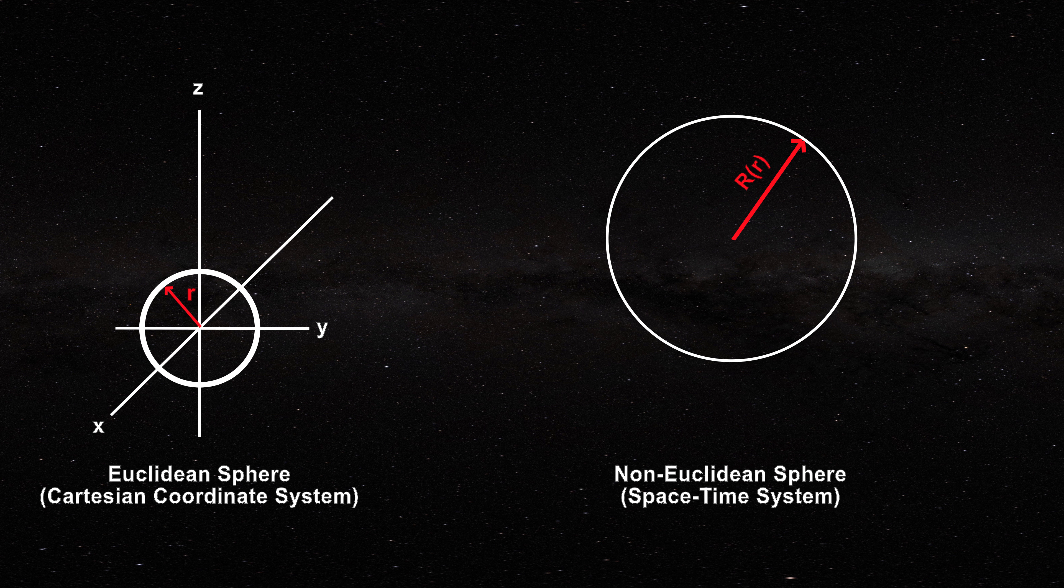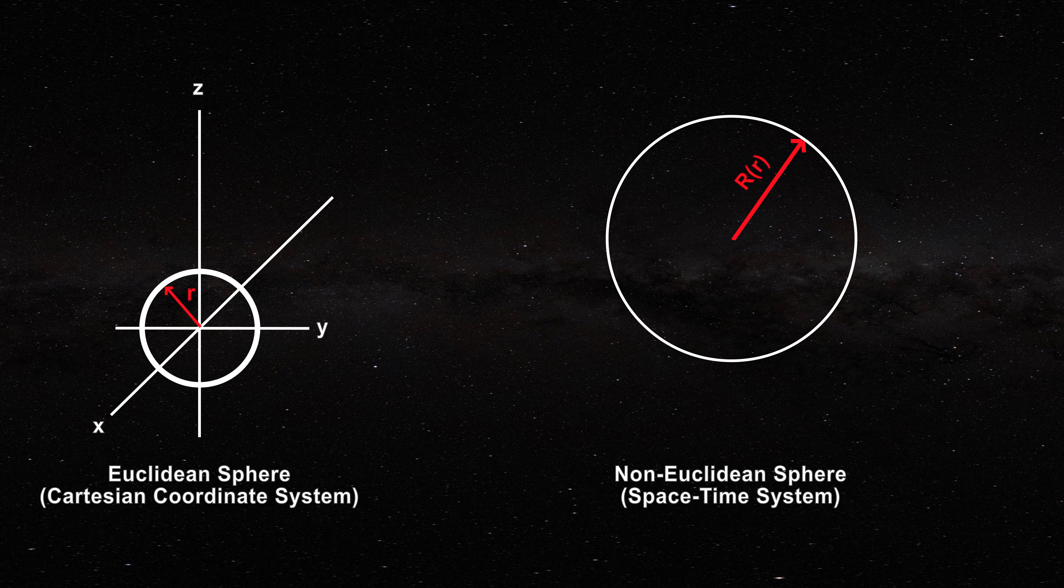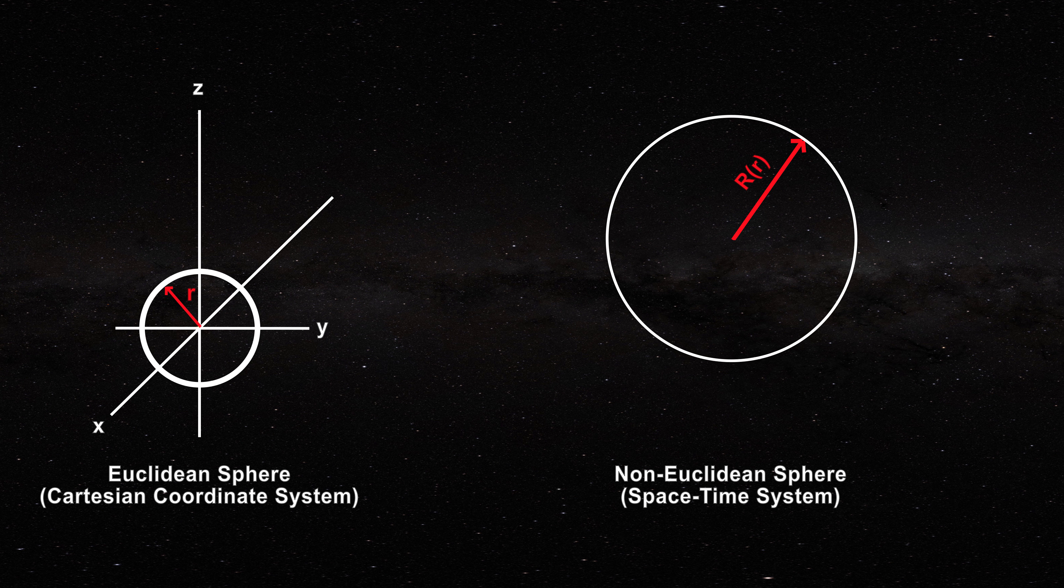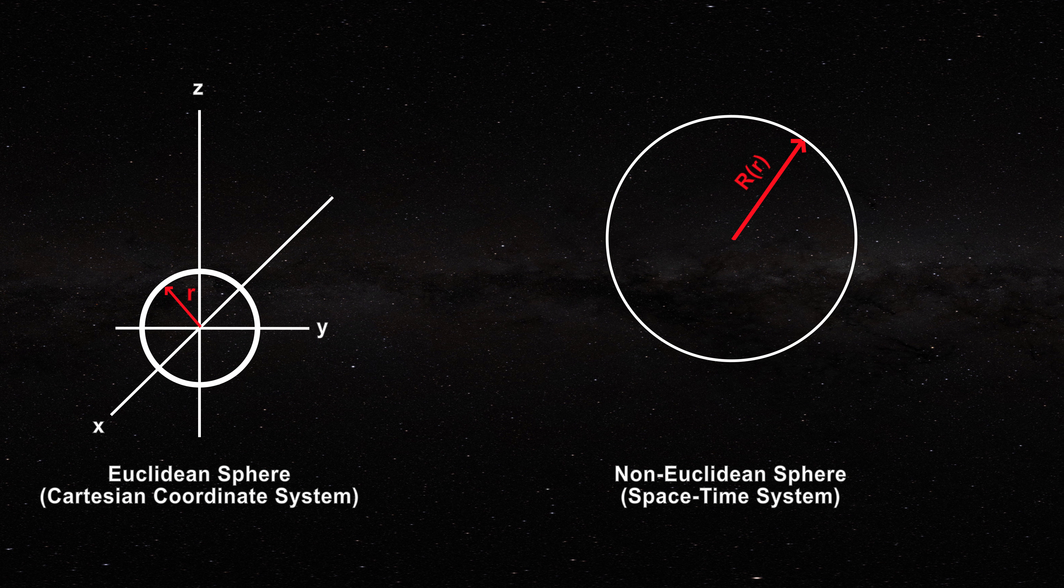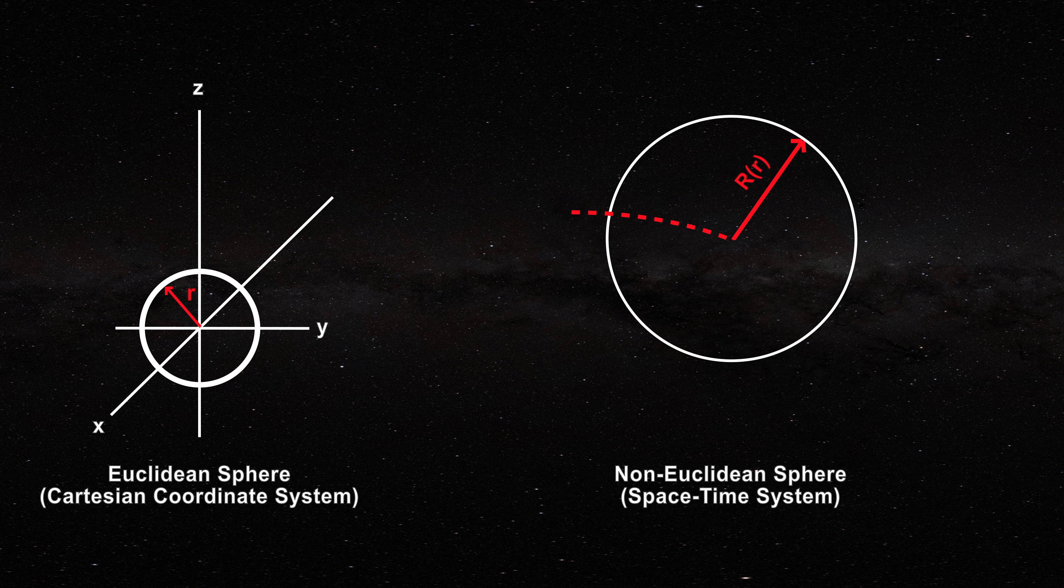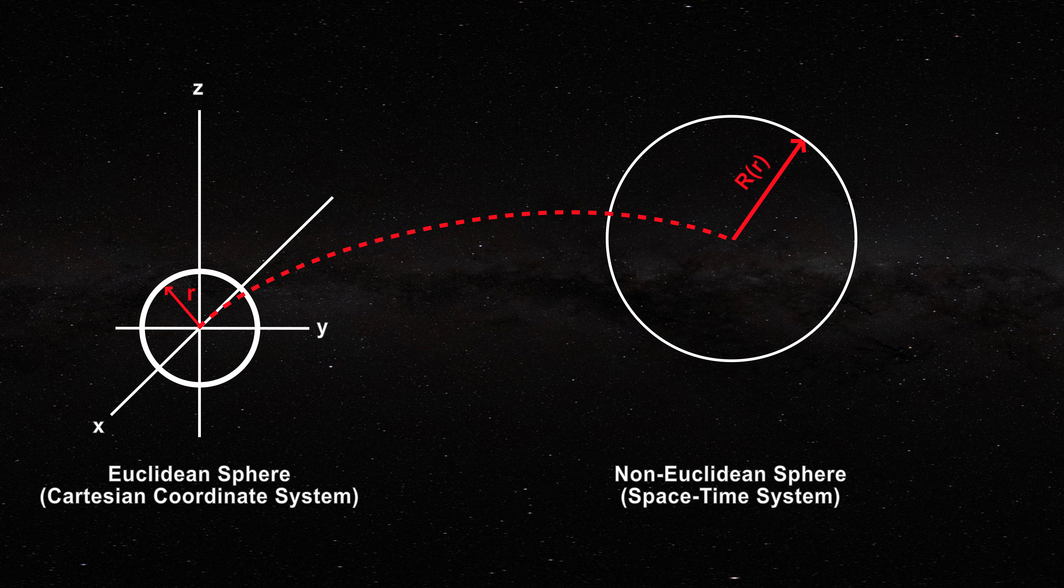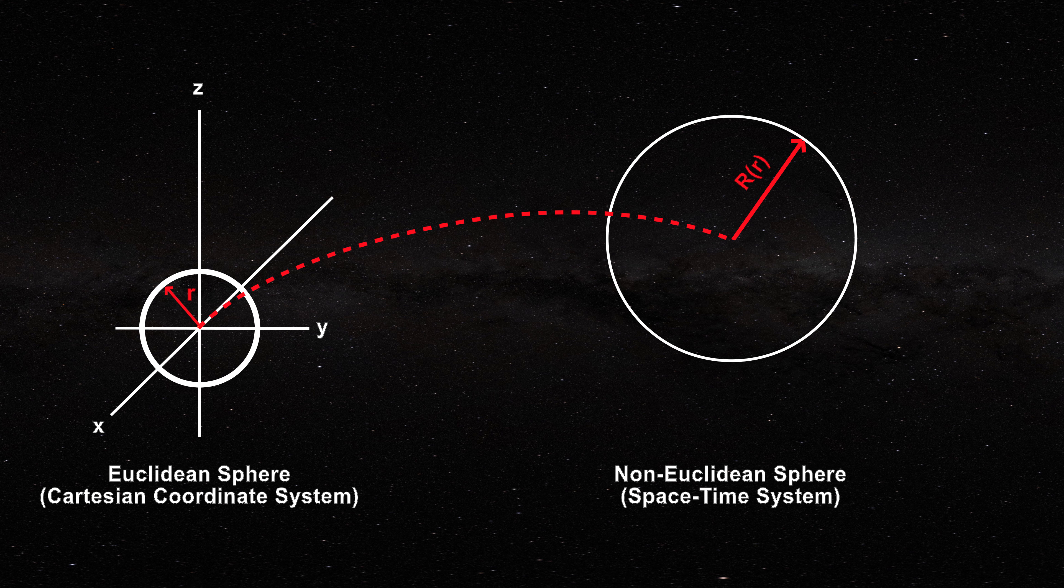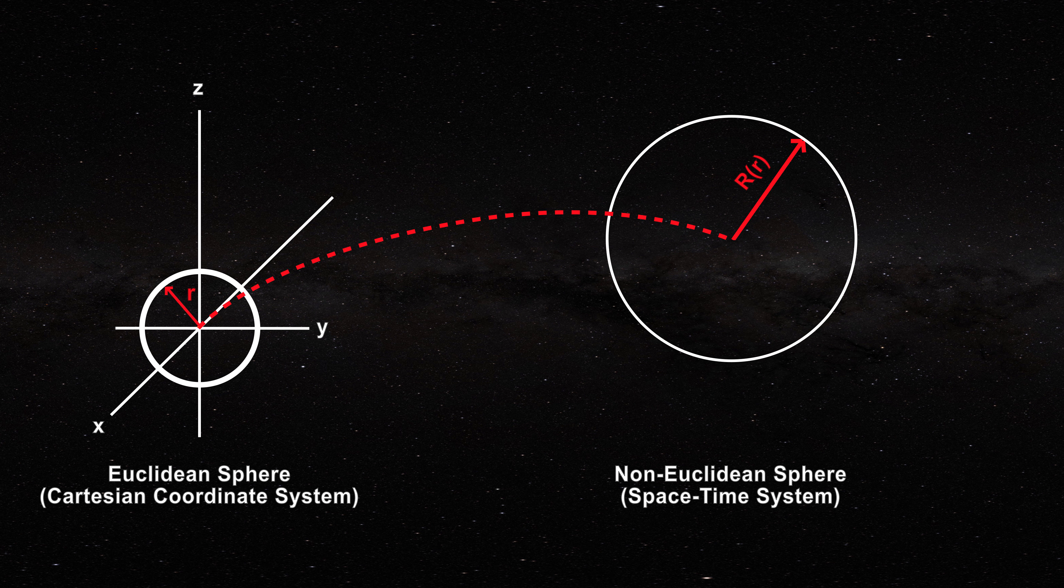One must calculate the radius of the non-Euclidean sphere. Black hole theory seeks to make the center of a black hole non-Euclidean sphere correspond to the center of a Euclidean sphere located at the origin of its coordinate system, indicated by the red dashed line.